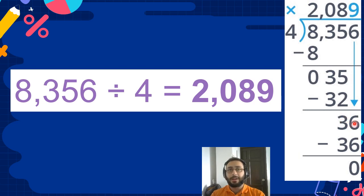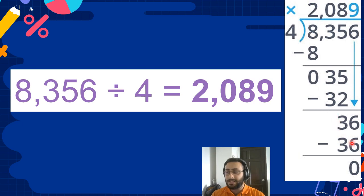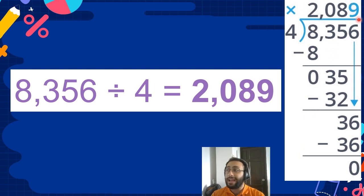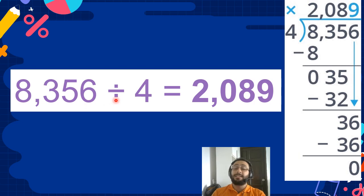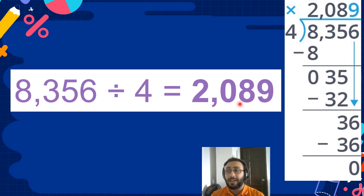36. How many 4's fit into 36? 9. Pretty easy. So 9 times 4 is 36. The answer is 0. So we have no remainder because it's 0. So the quotient for the answer is 2,089. Let's read it together: 8,356 divided by 4 equals 2,089.